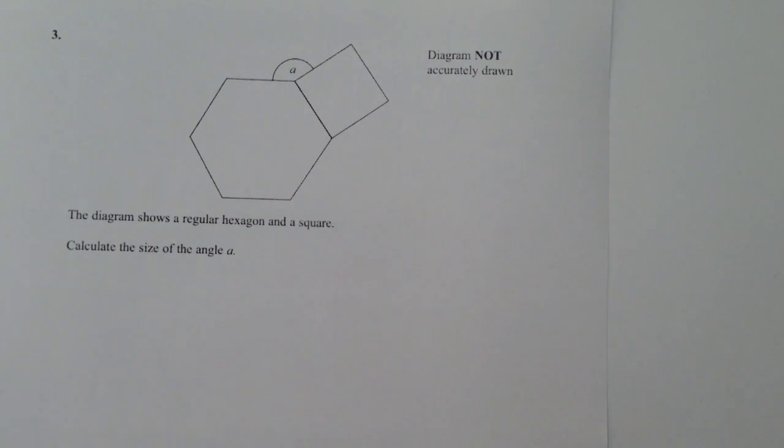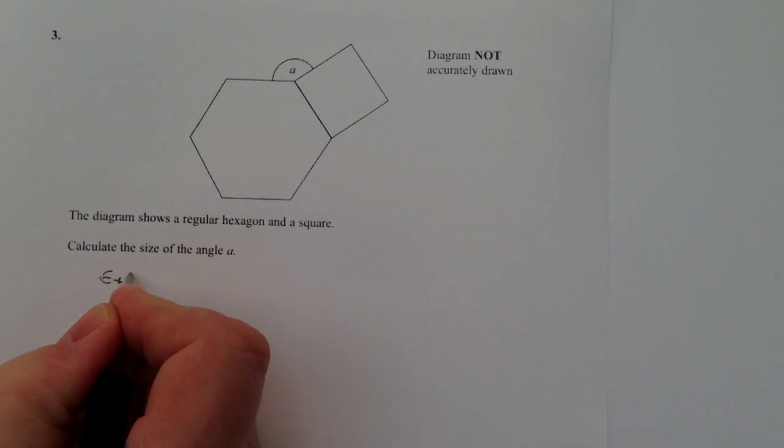The thing about a regular hexagon or any regular shape is that the external angles add up to 360 degrees. So the external angles of a regular hexagon are going to be 360 divided by the number of sides which is 6.